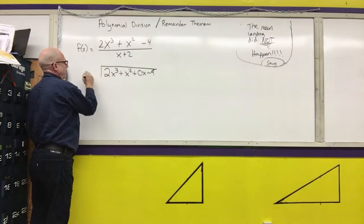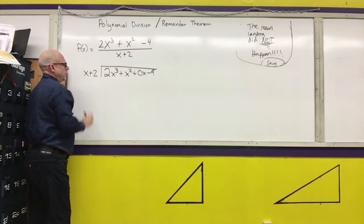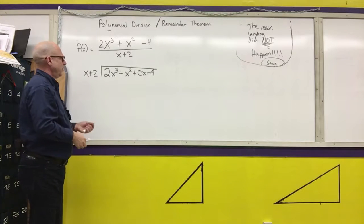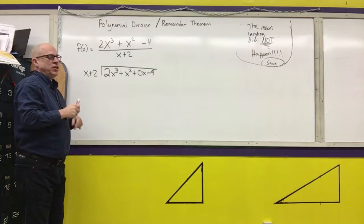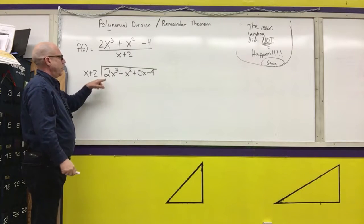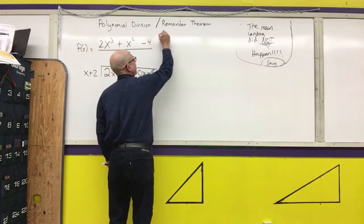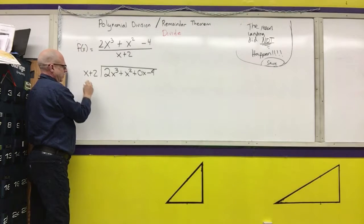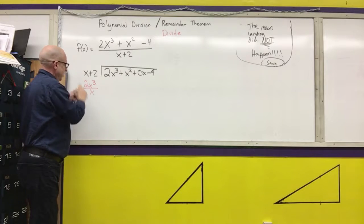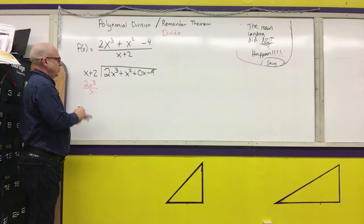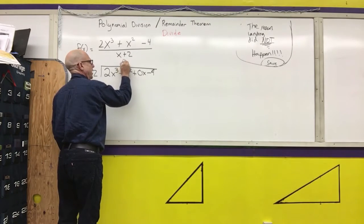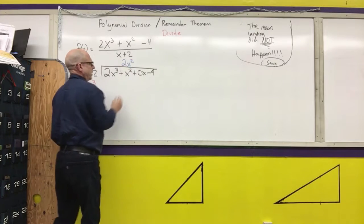Then I'm going to write my divisor out here. For polynomial long division, I think it's easier than regular long division because I'm only concerned about one term — you do the same steps over and over again. Our first step is to divide, and what we're going to divide is the leading term divided by the leading term. So I have 2x cubed divided by x, which is 2x squared. I'm going to write that over the x squared term so everything lines up.